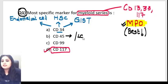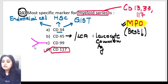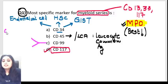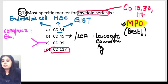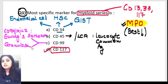CD45 is the other name for leukocyte common antigen, so obviously every leukocyte — every WBC — is going to express CD45. Next, CD99: when I say 99, you have to think of one bone tumor and one ovarian tumor. The bone tumor is Ewing's sarcoma — CD99, also known as MIC-2, is the marker of Ewing's sarcoma. This came in the AIIMS exam in November 2019. The ovarian tumor is granulosa cell tumor, which is also CD99 positive.